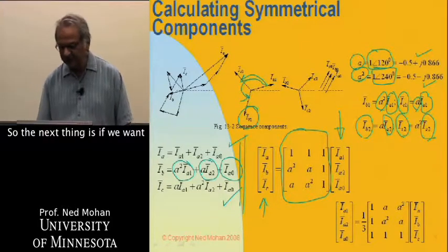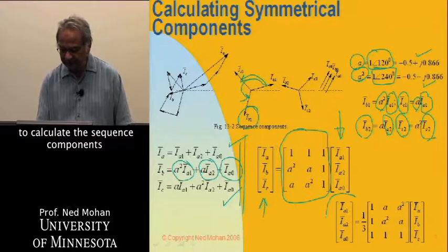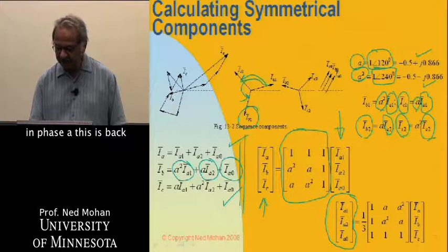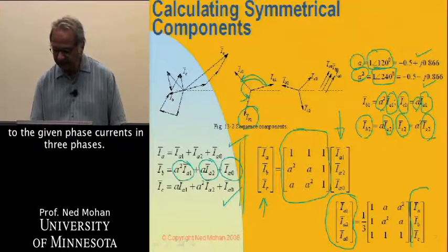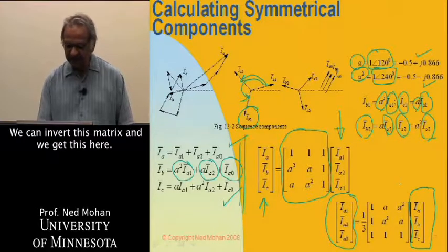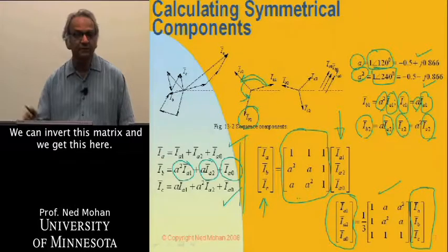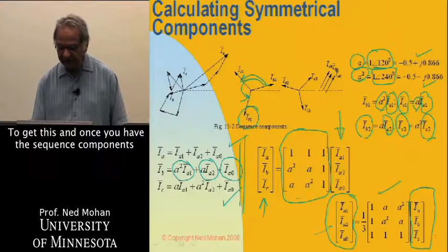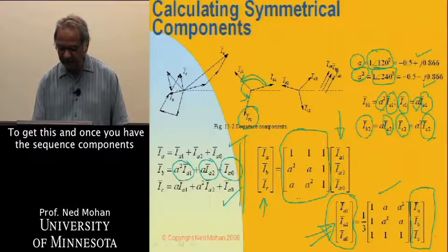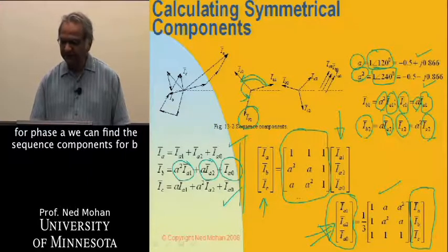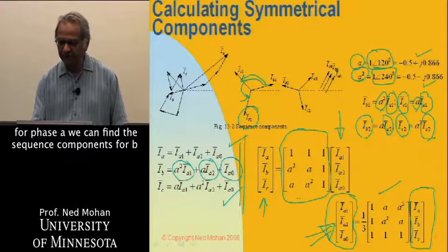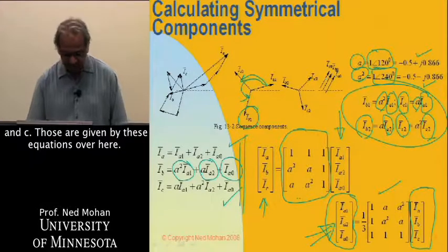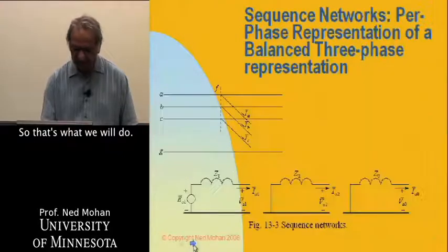The next thing is, if you want to calculate the sequence components in phase A with respect to the given phase currents in three phases, we can just invert this matrix and we get this here. Just a matrix inversion to get this. Once you have the sequence components for phase A, we can find the sequence components for phases B and C. Those are given by these equations over here.